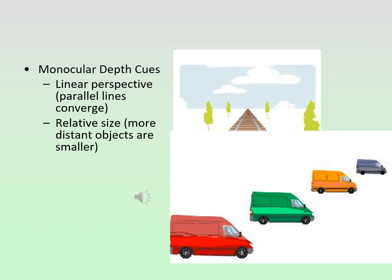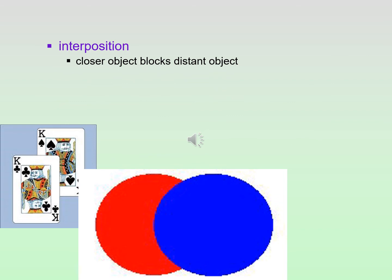That's relative size. If you look at the little trucks in the image, the small truck looks further away from us, because in real life things that are smaller are further away — the closer you are to something, the larger it appears. Another monocular cue is interposition: closer objects block more distant objects. So the blue circle looks closer to us than the red one — just by making it appear in front of the red, the blue looks closer.